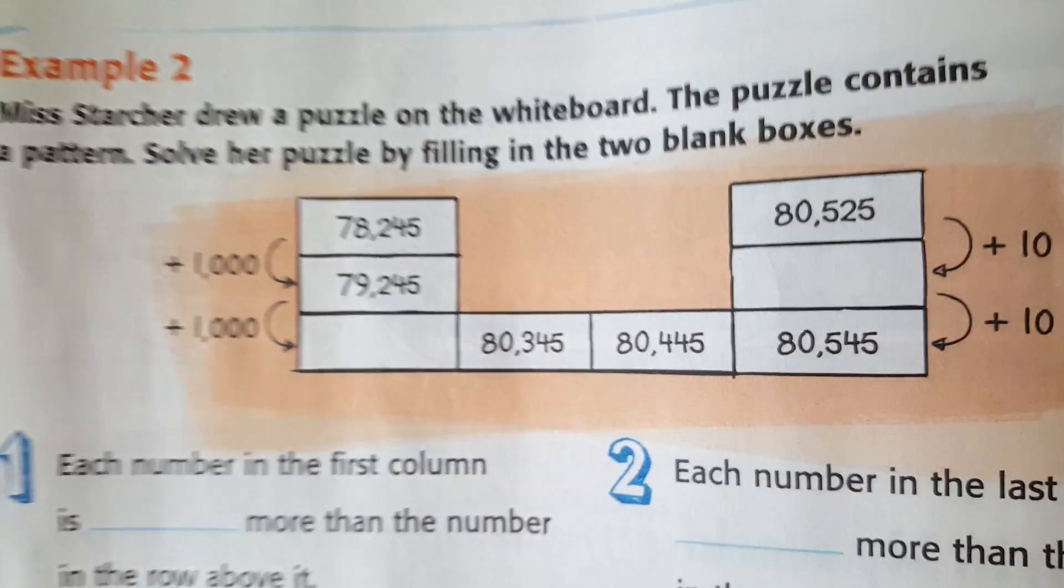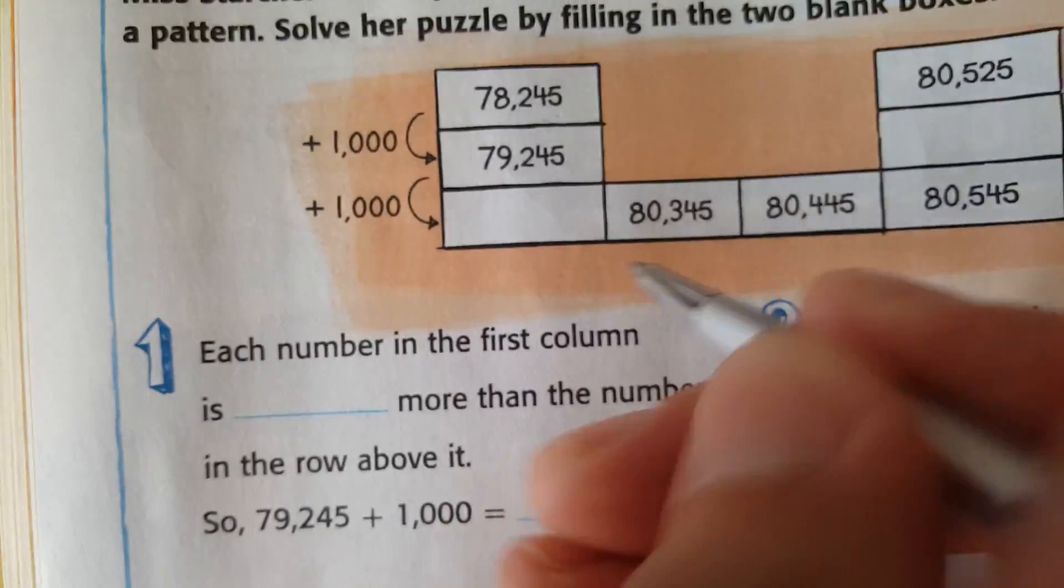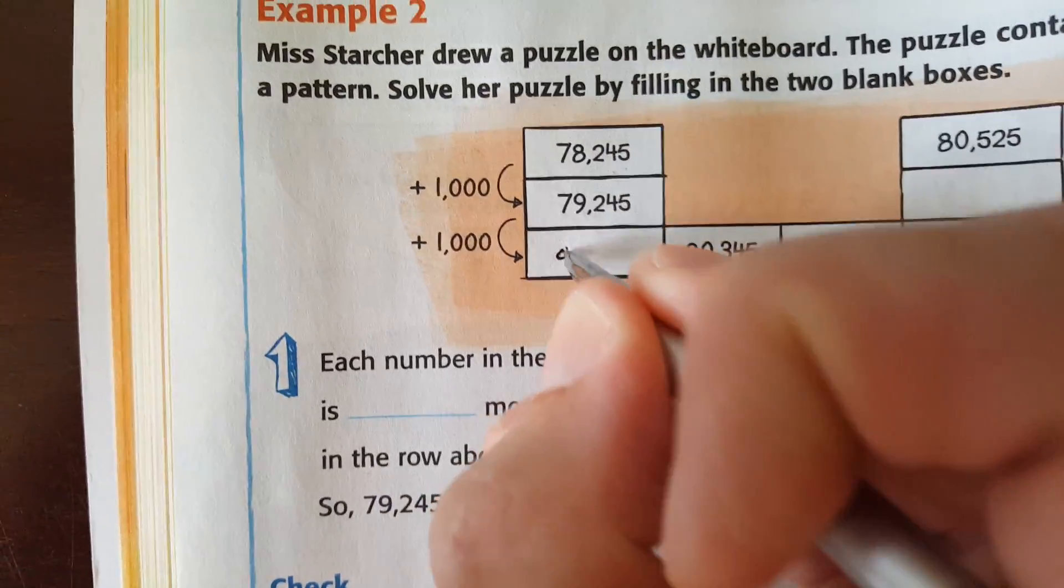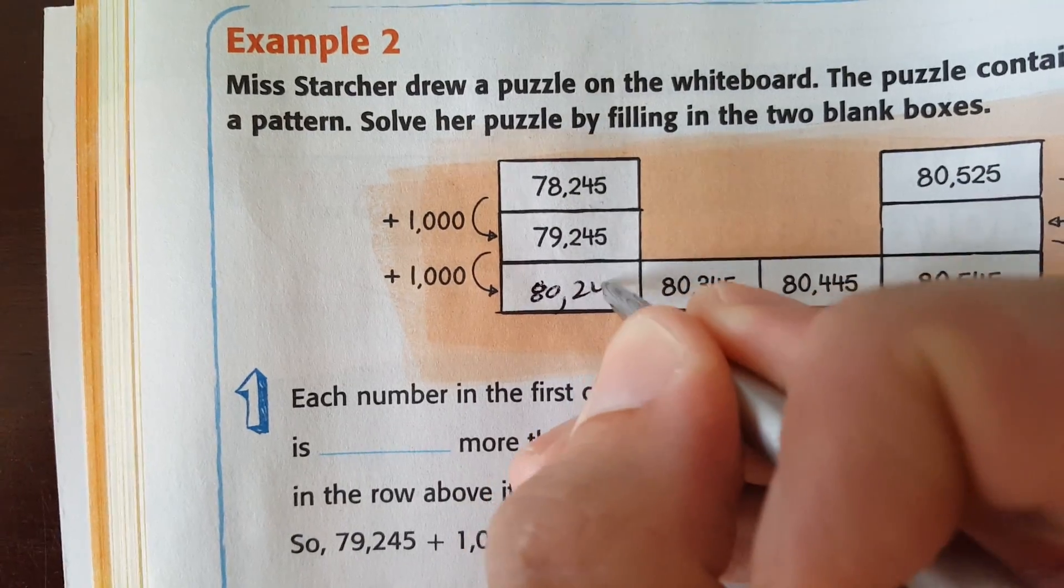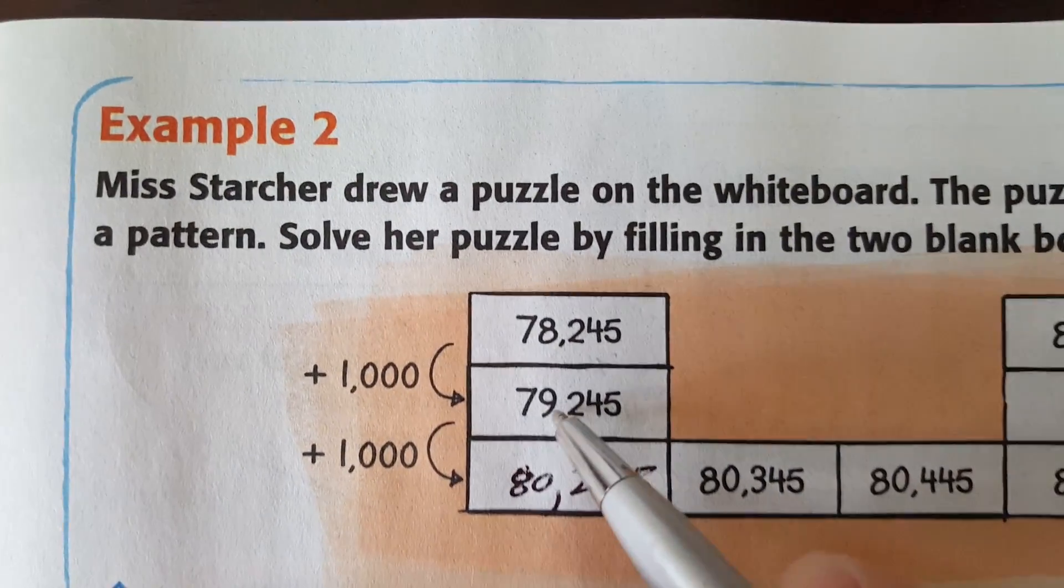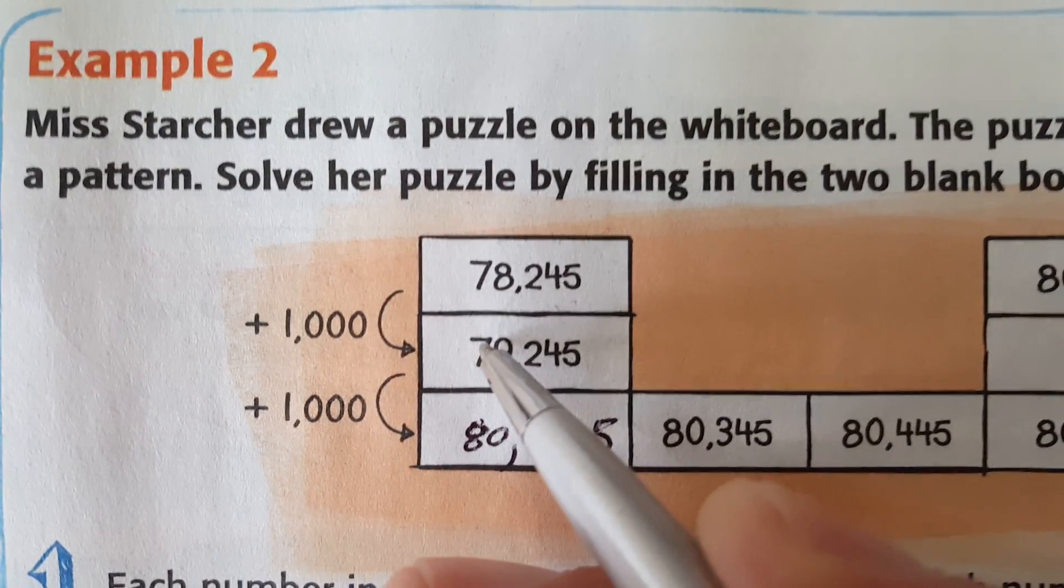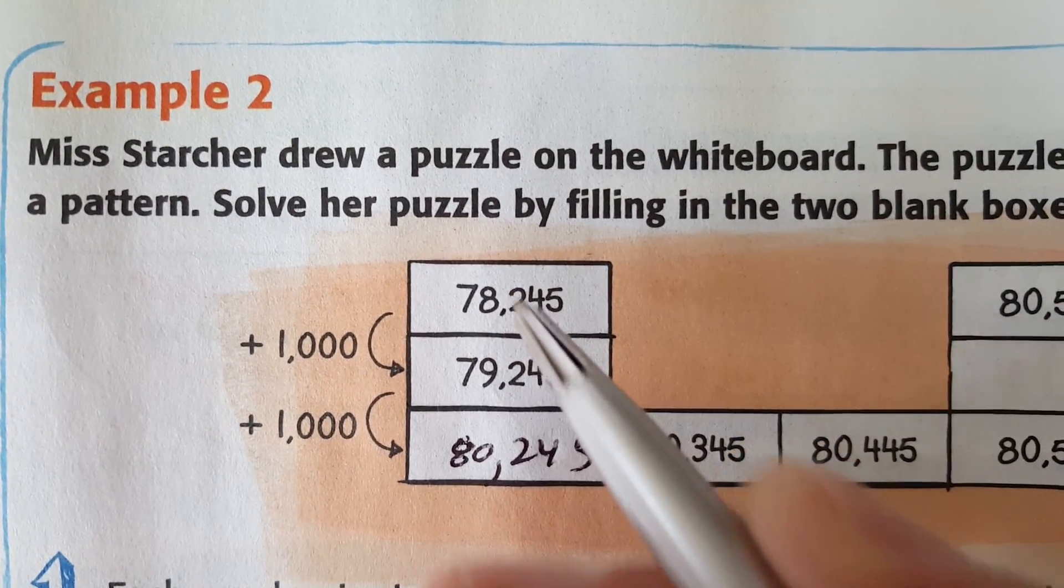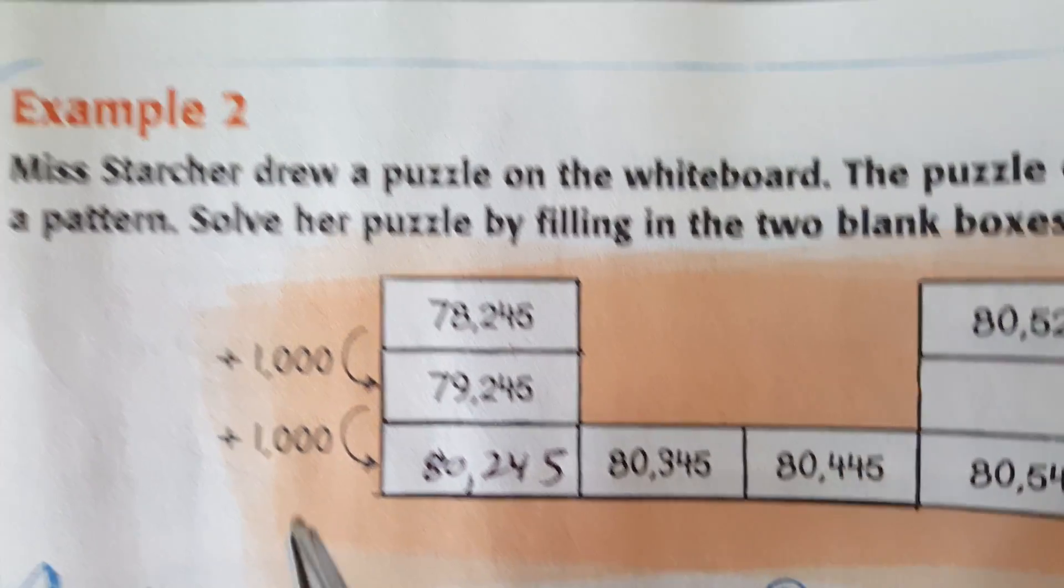Notice it's in the thousands place. For this one, it wants you to do the same exact thing. You add a thousand. When you add a thousand to the nine, it carries over into the ten thousands. 78,000, 79,000, 80,000. It's telling you what to do right there.